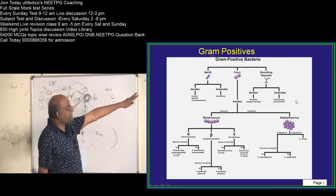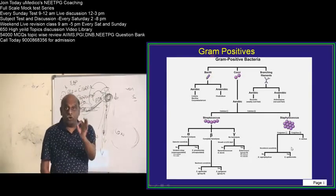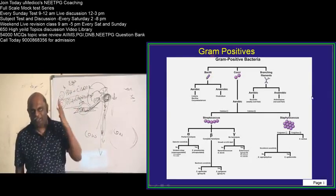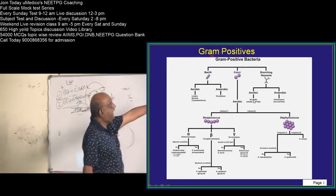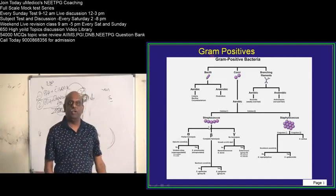Then, if you look at the branching filaments, once more, they are divided into aerobic and anaerobic, which you have to be very clear. What is the aerobic branching filament, which is gram positive? Nocardia.